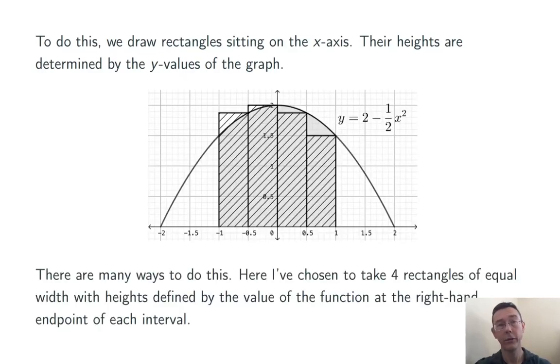There are many different ways I could do this. Here, I've chosen to use four rectangles. I could have used more or less. I have chosen to make them all of equal width, here, one half. And I've chosen to take their heights to be determined by the value of the function at the right-hand endpoint of each of those subintervals. So the heights are going to be f of negative 0.5, f of 0, f of 0.5, and f of 1.